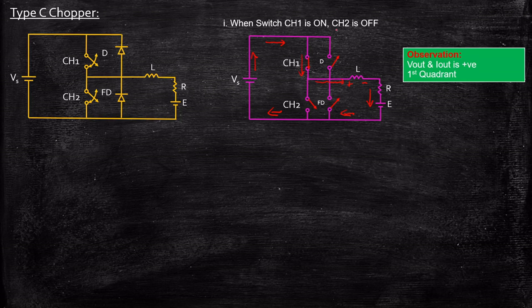So in case 1, CH1 is on and CH2 is off. Only CH1 will be conducting and the inductor starts charging. As a result, Vout and Iout are positive and the circuit operates in the first quadrant.